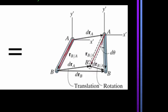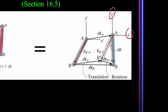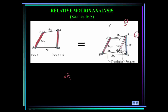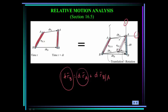Point A is called the base point in this analysis — it generally has a known motion. The x prime, y prime frame translates with the body but does not rotate. We can write that the displacement of point B is d r_B = d r_A + d r_{B/A}, where the first term is due purely to translation and the last term is displacement due to rotation.